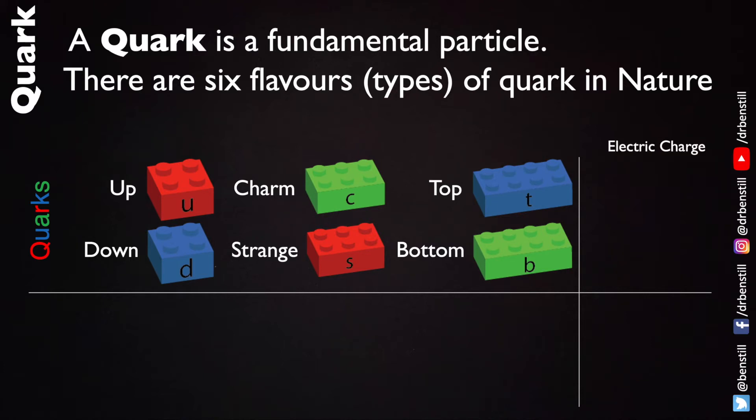Now each of these particles have an electric charge. As mentioned the up type quarks have plus two thirds of the electronic charge, where the electronic charge E is the magnitude of charge that is on an electron or a proton. The down type quarks have minus one third of this electronic charge.